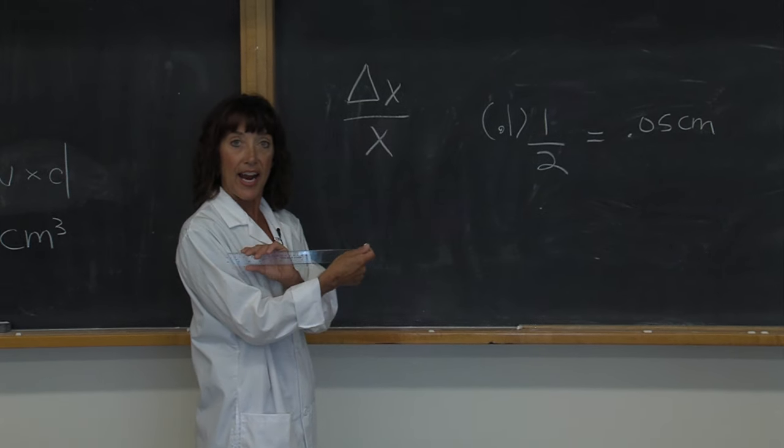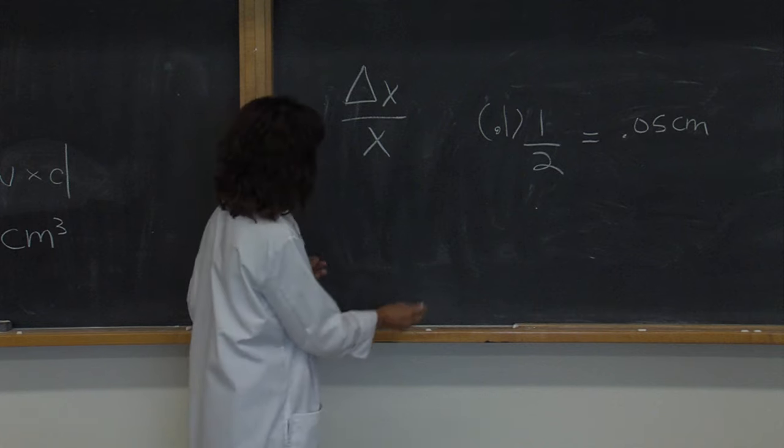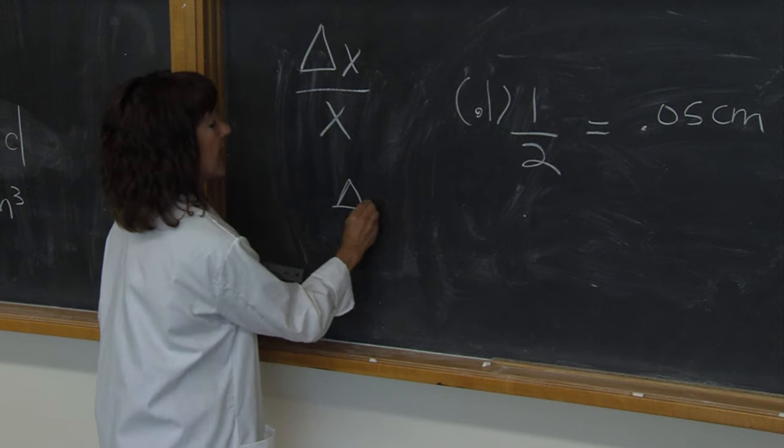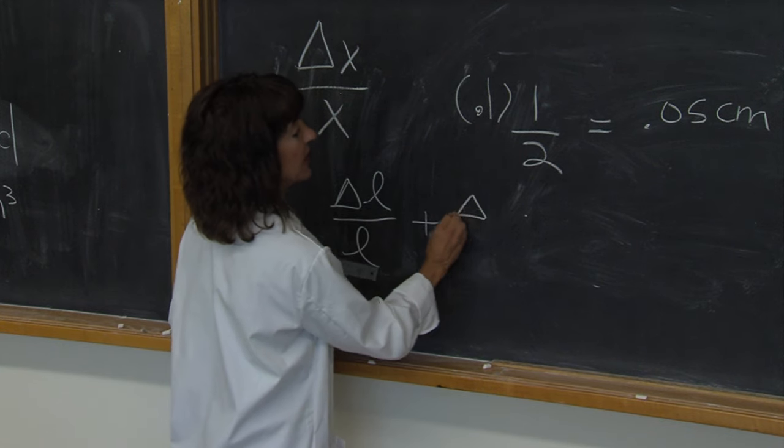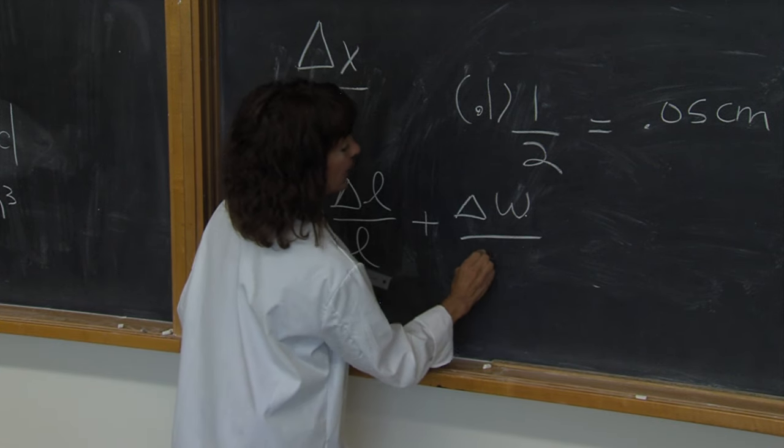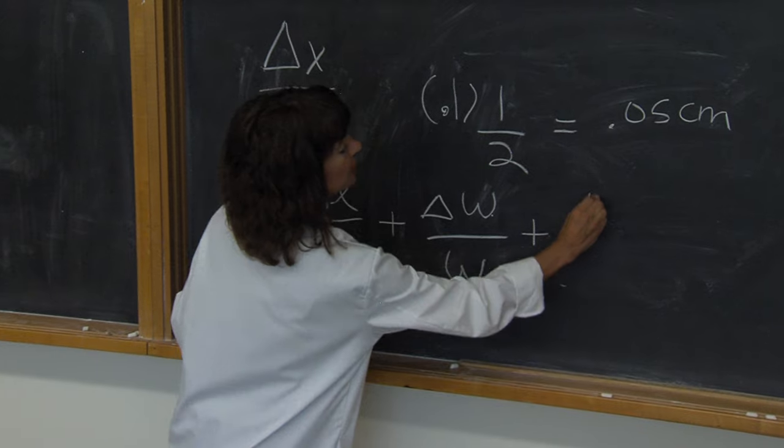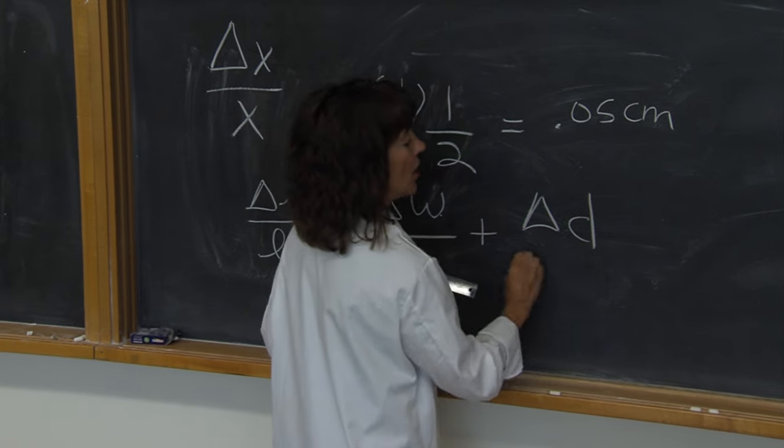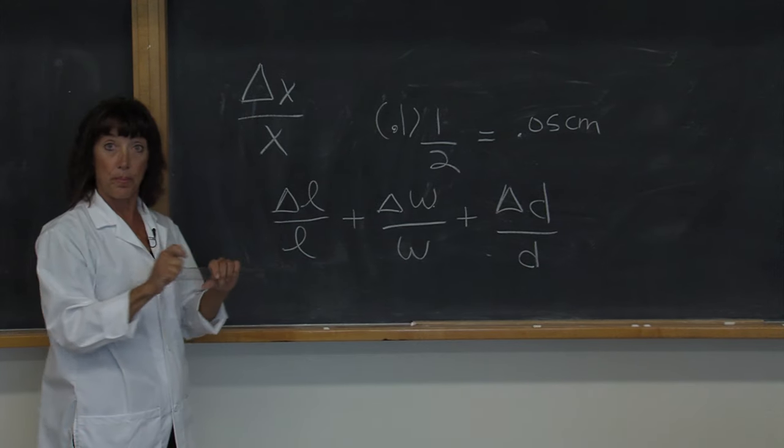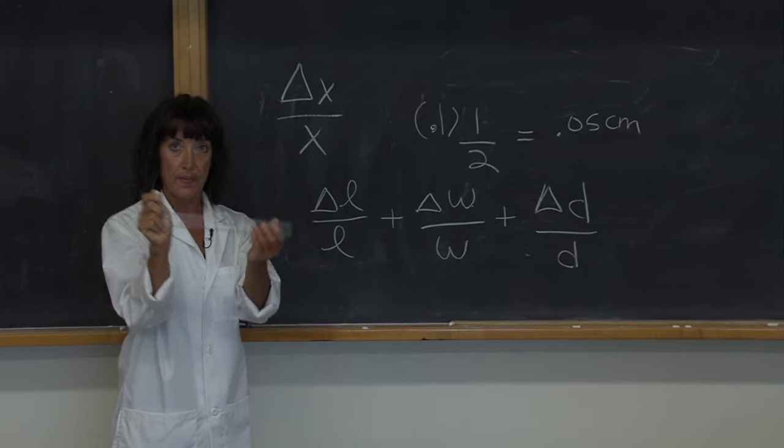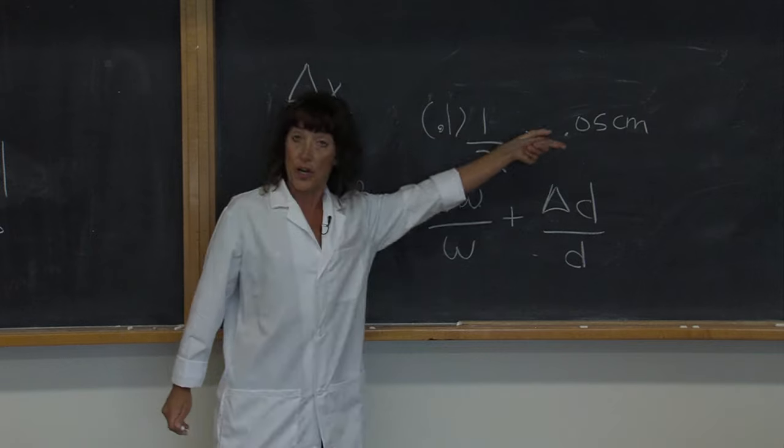So to calculate the error in our volume, we will have to take the delta length over the actual length measured, plus the delta width over the actual width measured, plus the delta depth over the actual depth measured. And all of these top values, since we are using the same instrument for all of them, will be 0.05 centimeters.